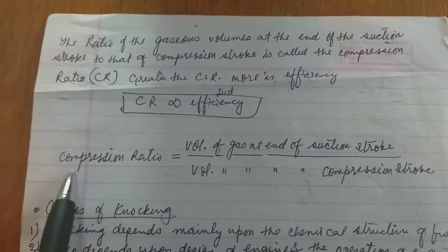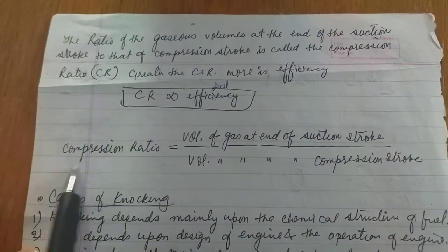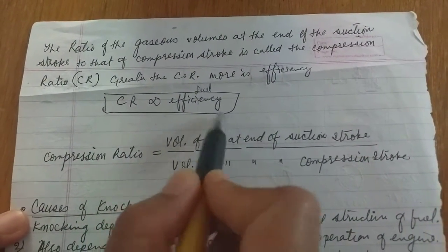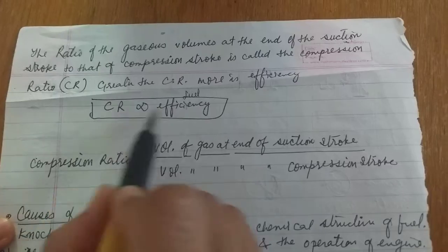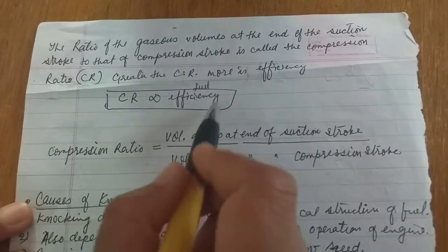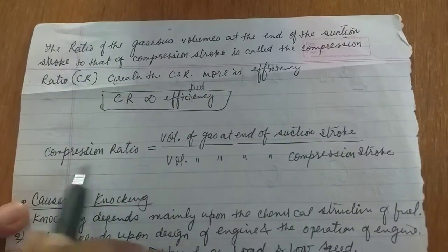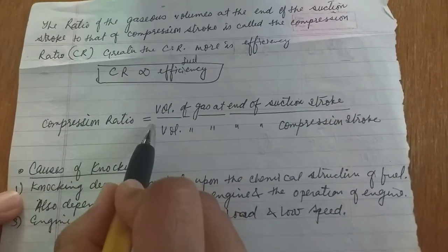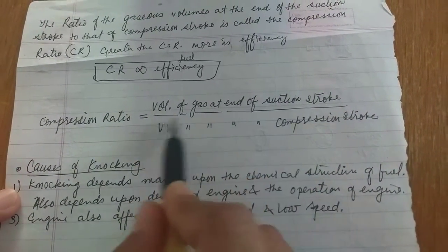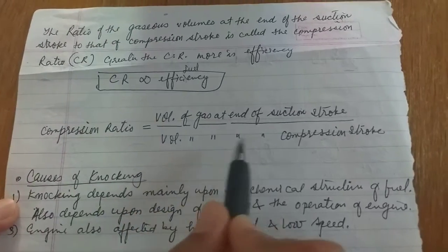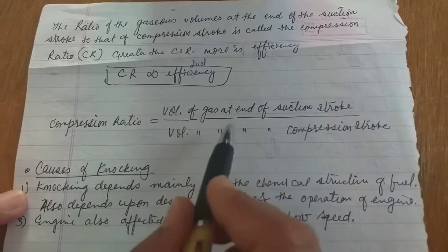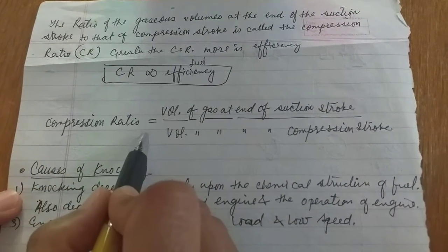Now we have to know about compression ratio. Compression ratio is directly proportional to fuel efficiency. Compression ratio equals the volume of gas at the end of the suction stroke upon volume of gas at the end of the compression stroke. It is the ratio of both and is called compression ratio.